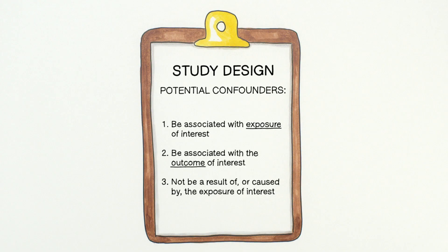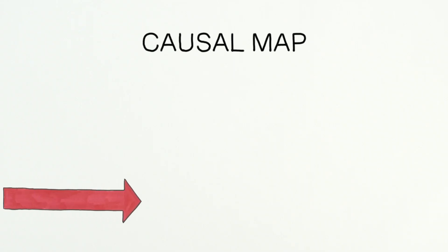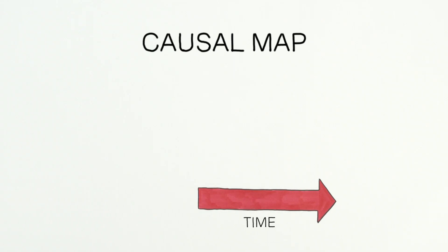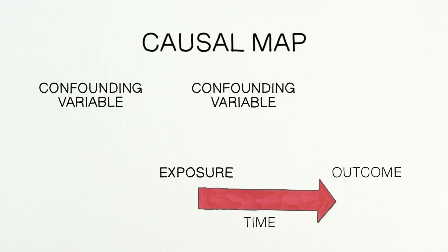And three, not be a result or caused by the exposure of interest. This final criterion is about temporality — in other words, which of these exposures came first? If the factor in question meets all three of these criteria, it is considered a confounder. It can be helpful to draw the factors of interest in what's called a causal map, which is a bit like a timeline where time moves from left to right. We put the exposures on the left and the outcome on the far right, then consider whether the potential confounding variable would sensibly occur before or after the exposure and place it on the map accordingly.